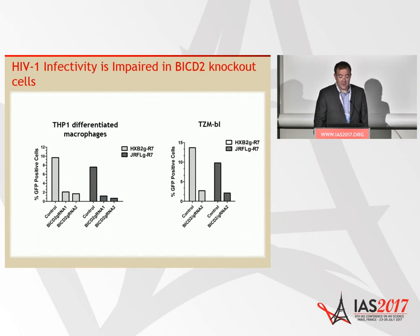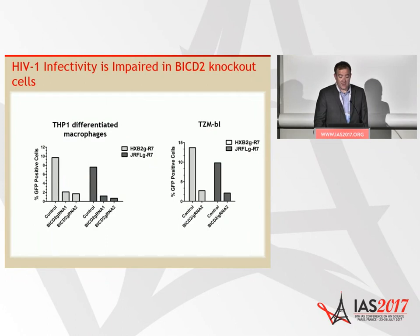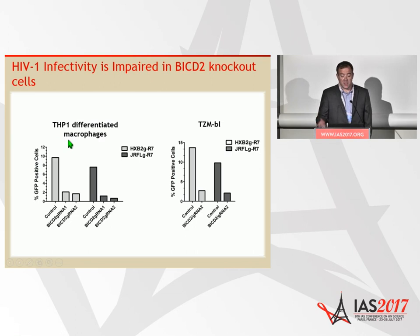Similar to the genome-wide screen, when we knock down Bicaudal D2, we observed that infection by HIV pseudotyped with either an X4 or R5-tropic envelope is decreased. More importantly, this occurs in THP1-differentiated macrophages. We then sought to map this block to infection being induced by Bicaudal D2 depletion.